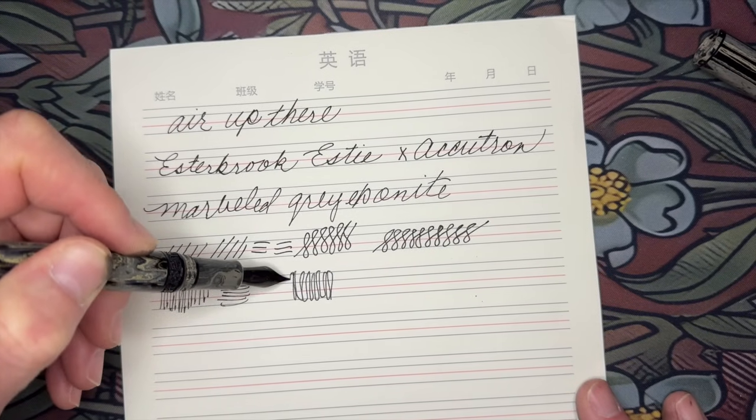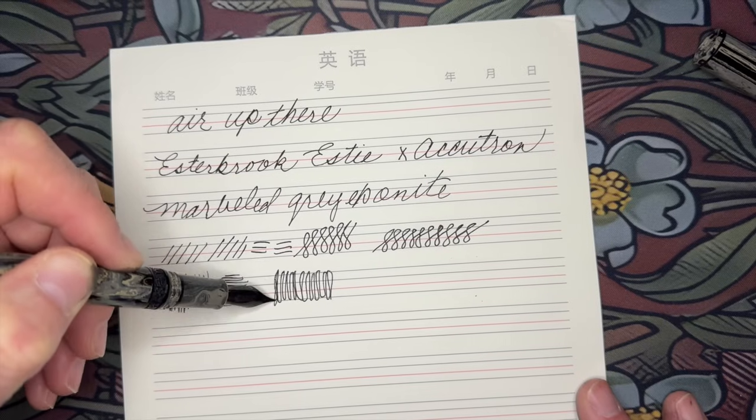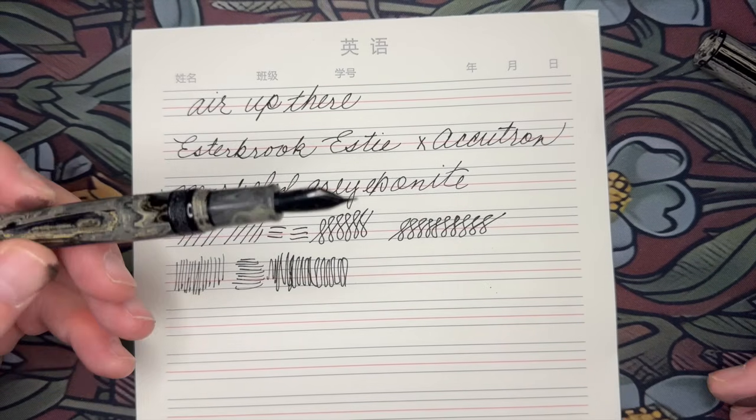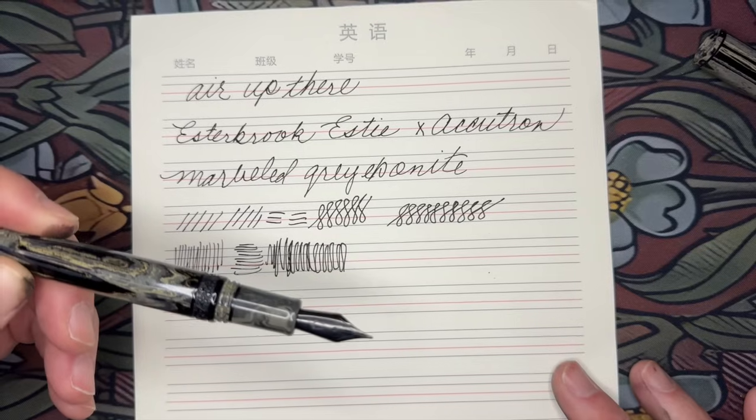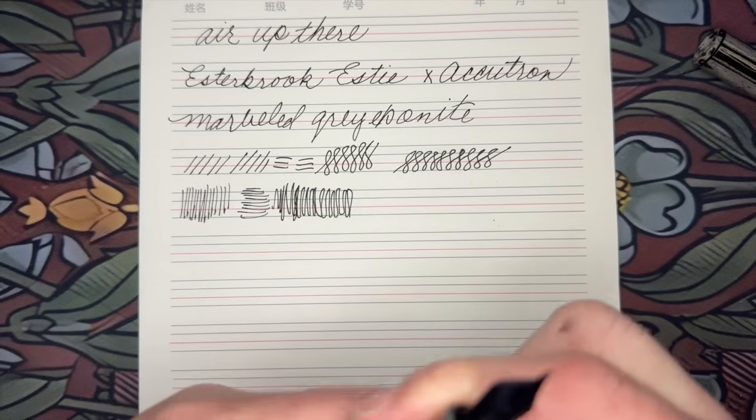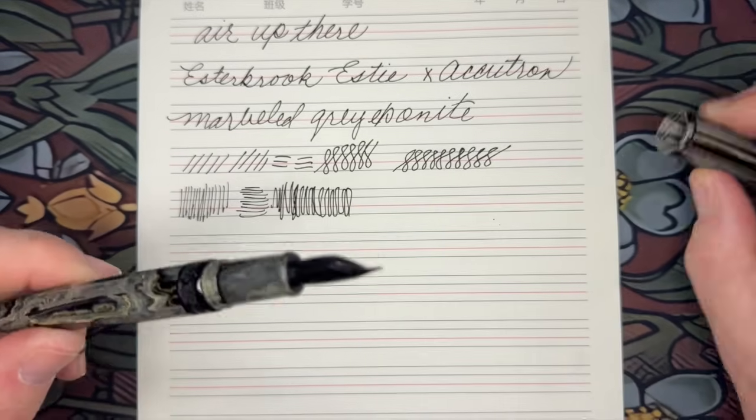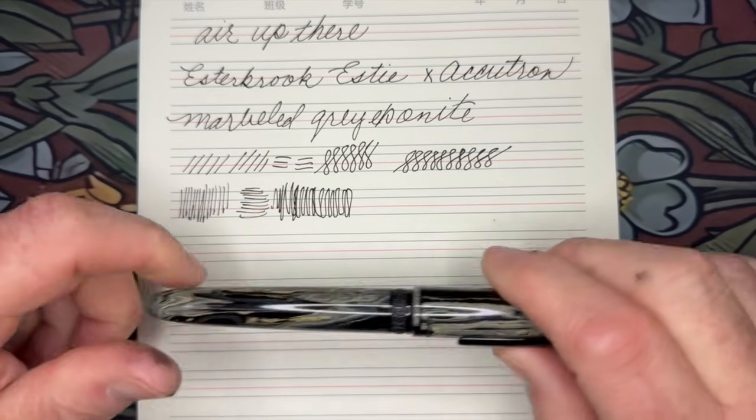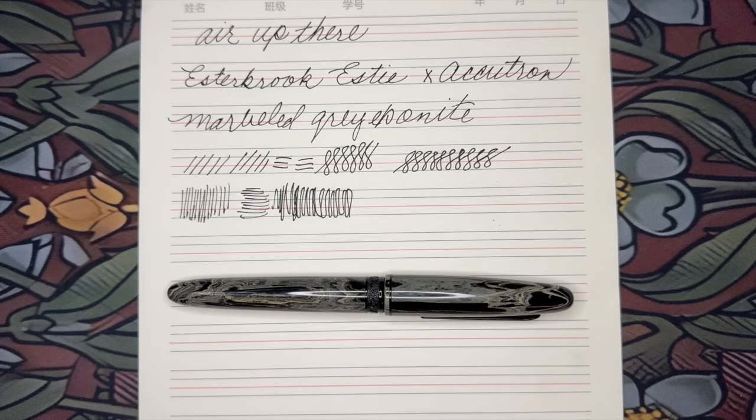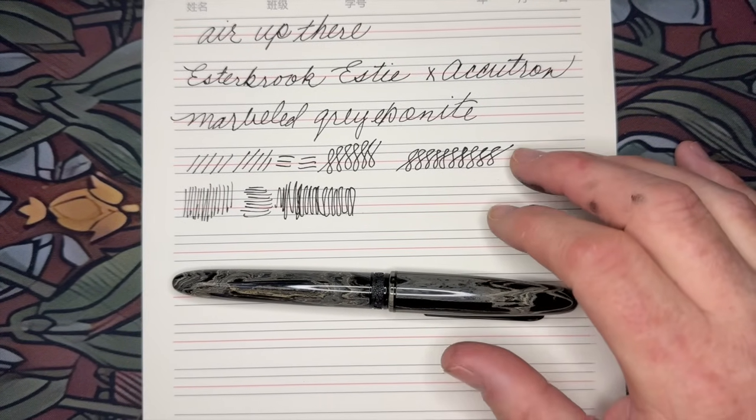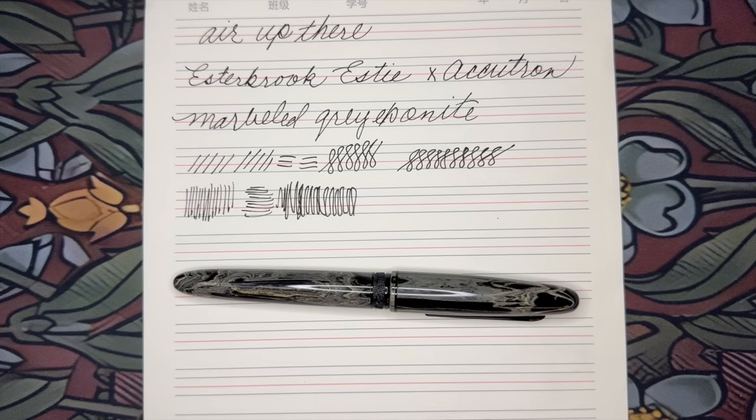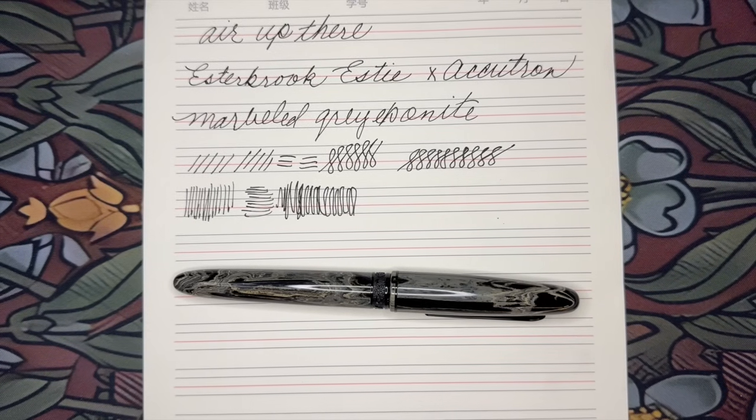And we all know that Esterbrooks use a Yovo number 6 nib. In my experience, they're consistently providing a nice writing experience. And when I say nice writing in this instance, what I'm referring to is reliable. You know, a Yovo steel nib, you can get all different nib grinds, you know, cursive italic, architect, journaler, waverly.